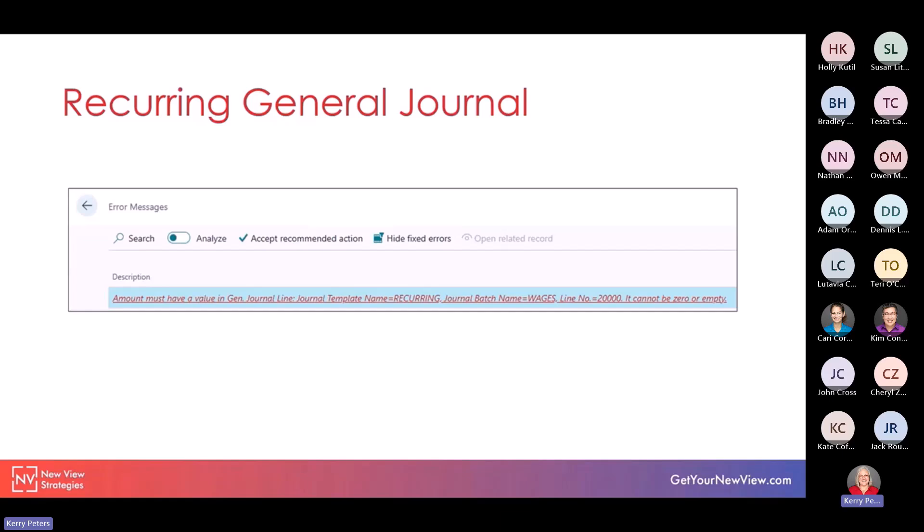That's a lot of additional work, and this often prevented users from utilizing recurring journals for journals where maybe they should be using them — but they sometimes have those zero dollar lines and don't want to use one of those workarounds, so they may just use a general journal instead. But we now have the ability to post those zero dollar lines without any error messages.